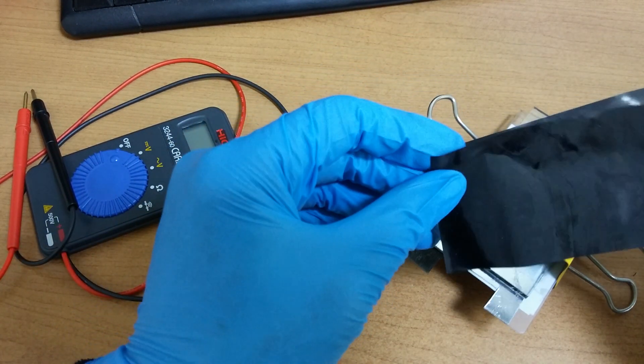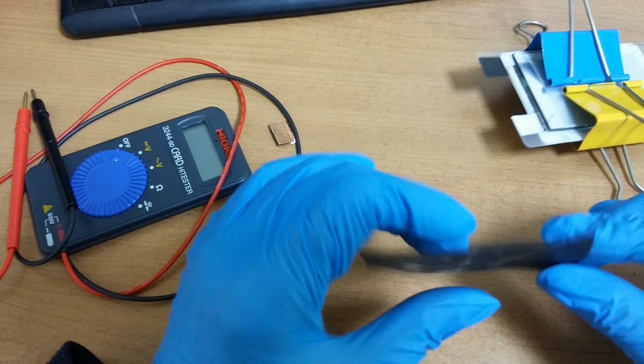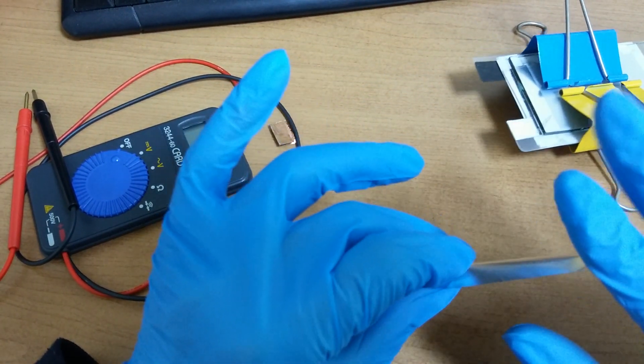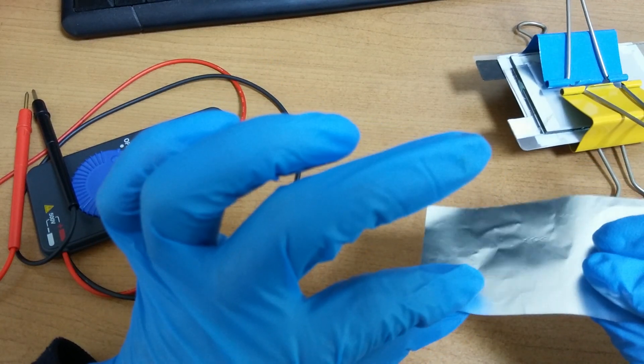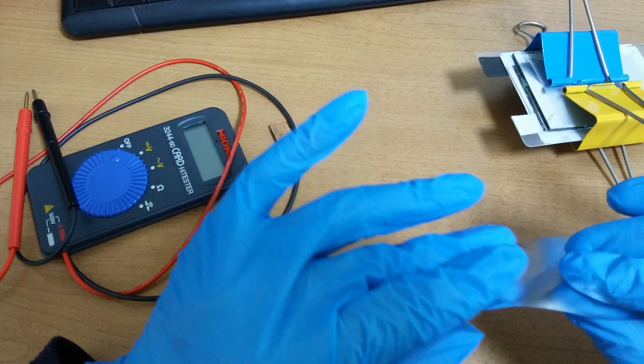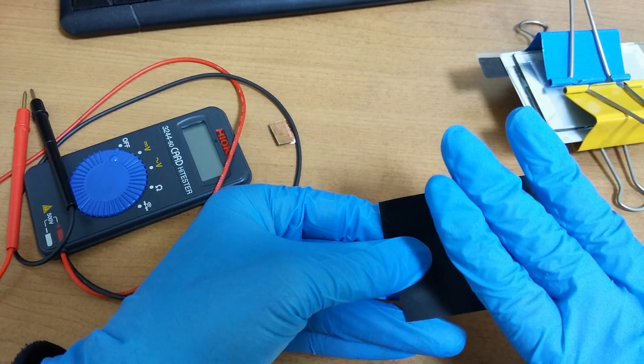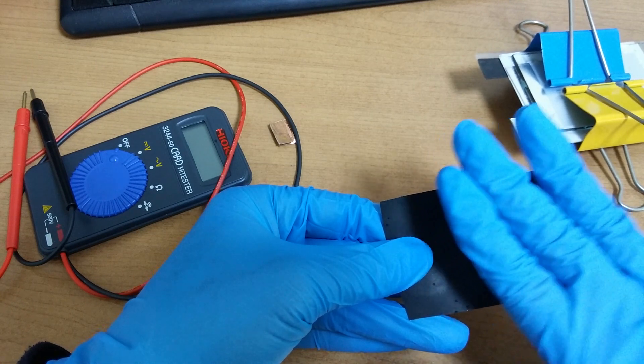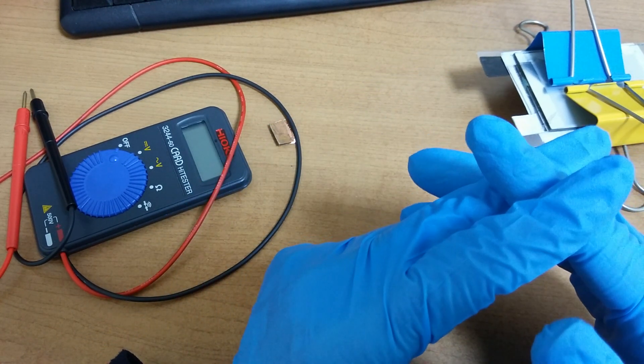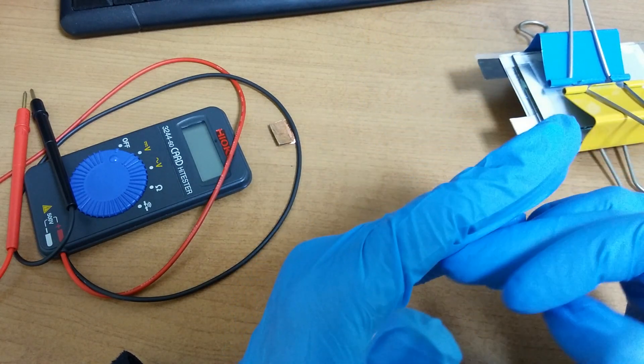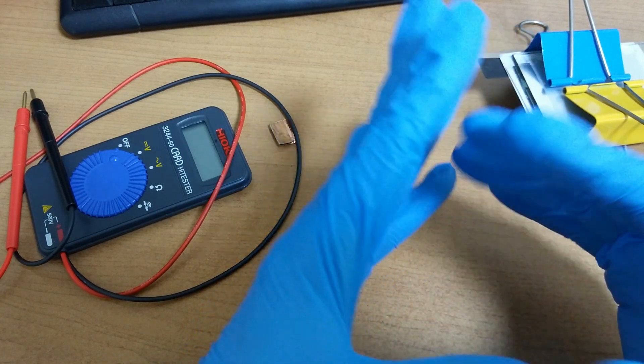When I made a battery, I have used iodine before. At that time I used aluminum. One side was aluminum and the other side was graphite. And I put iodine on graphite. But the performance of the battery was not satisfactory.